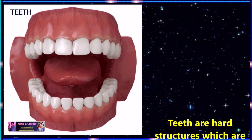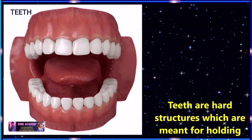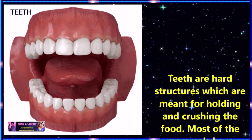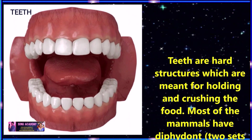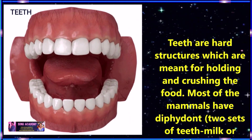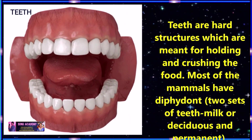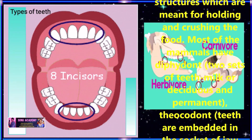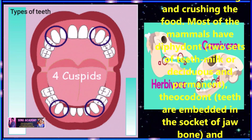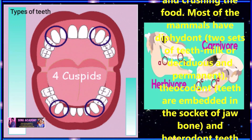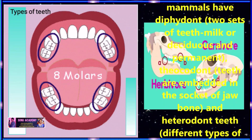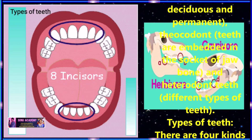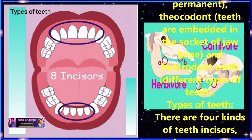Children, now let us discuss about teeth and their function. Teeth are hard structures which are meant for folding and crushing the food. Most of the mammals have diphyodont, meaning two sets of teeth — milk or deciduous and permanent set. Thecodont means the teeth are embedded in the socket of jaw bones. Another type of teeth are heterodont, meaning they have different types of teeth.